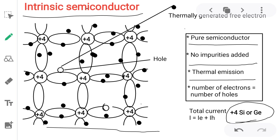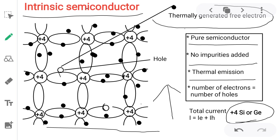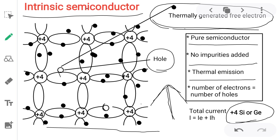As shown in the diagram, the +4 indicates — consider silicon or germanium — semiconductor atoms are bounded to one another. When I increase the temperature, this covalent bond breaks down. One electron comes out from this covalent bond, named as a thermally generated free electron, and an empty space is created, named as a hole. Again if I increase the temperature, one more empty space is created and one more electron is generated.